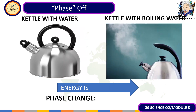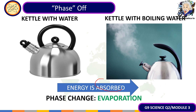Next example: a kettle with water and a kettle with boiling water. Identify whether energy is absorbed or taken away, and what specific phase change it undergoes. The correct answer is that energy is absorbed. As heat is absorbed, the kinetic energy of the particles increases and they move away from each other, going from liquid state to gas — in the process known as evaporation.